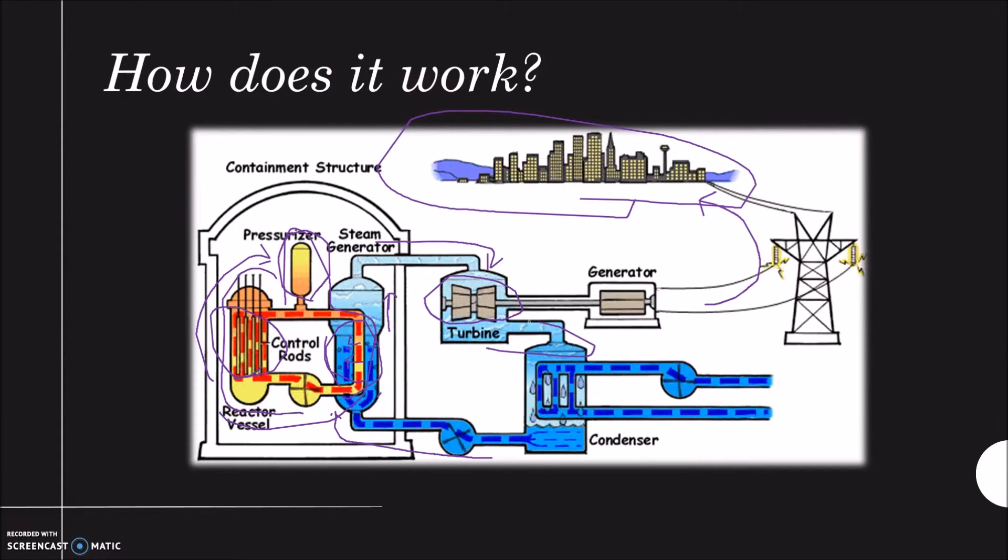Then the steam that was used for rotation of the turbine is cooled down by water from the condenser. The water from the condenser comes from a lake, ocean, or sea. When the water is cooled down, it returns into the cycle.